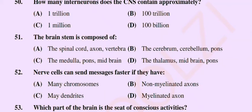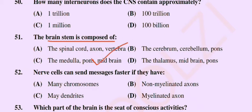Question number 51: The brain stem is composed of — option A: the spinal cord, axon and vertebrae, option B: the cerebrum, cerebellum and pons, option C: the medulla, pons and midbrain, option D: the thalamus, midbrain and pons. The correct option is option C: the medulla, pons and midbrain.